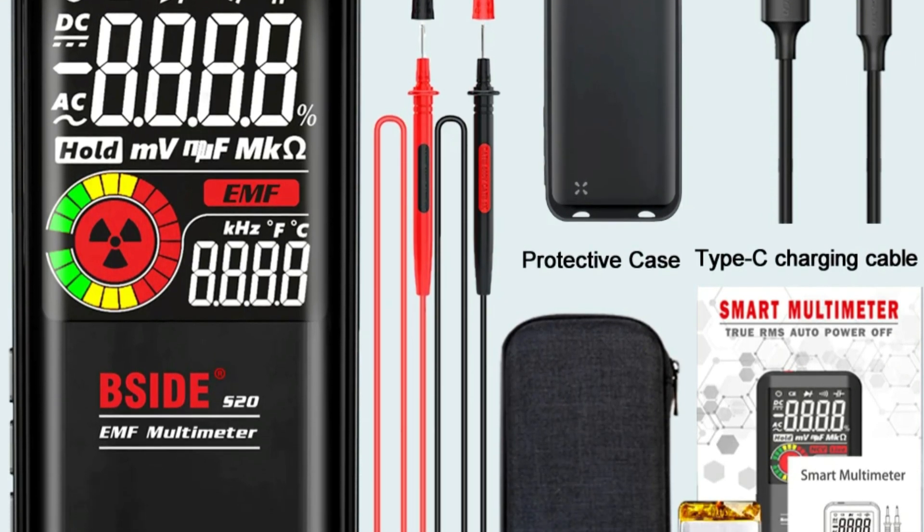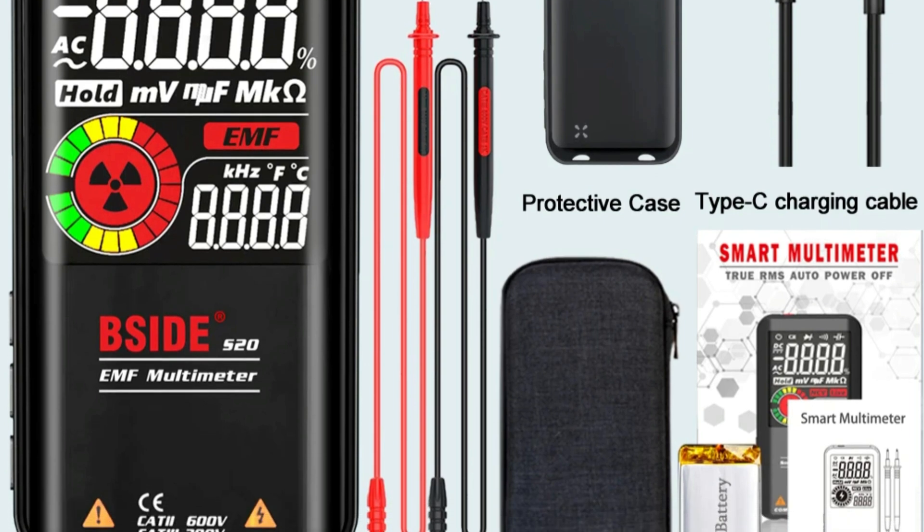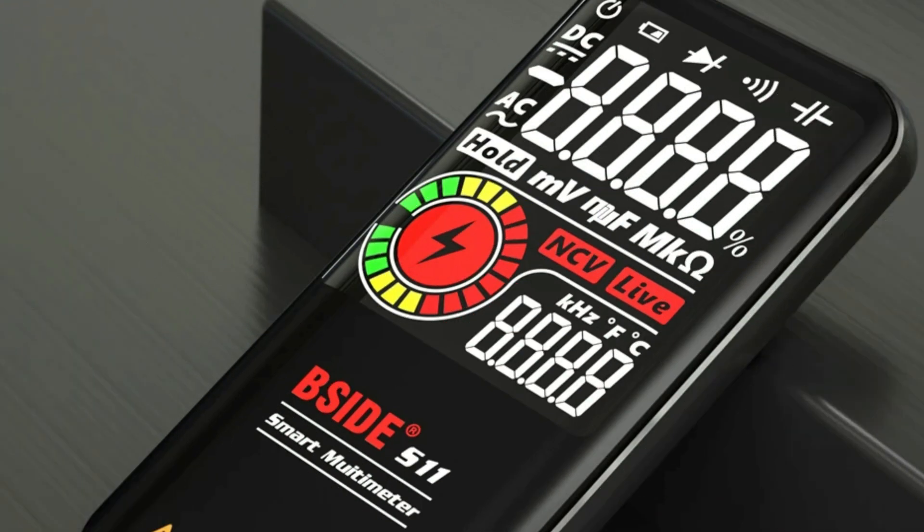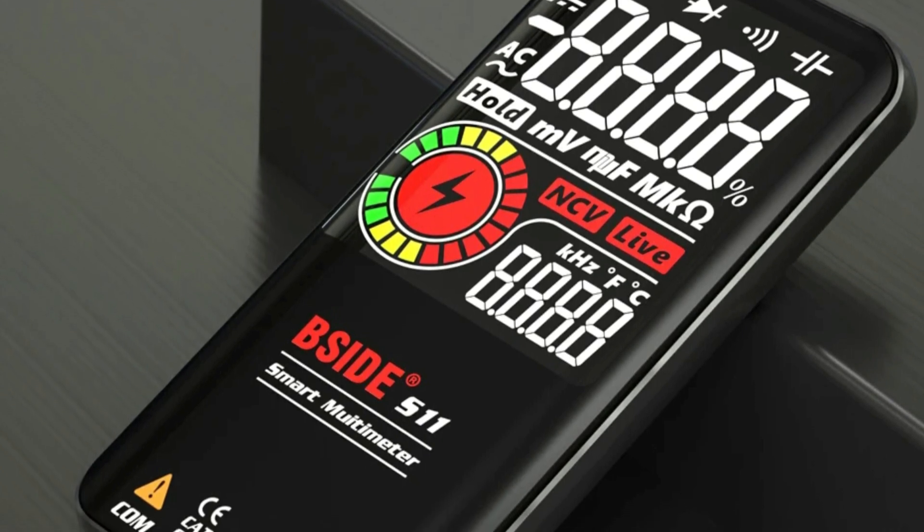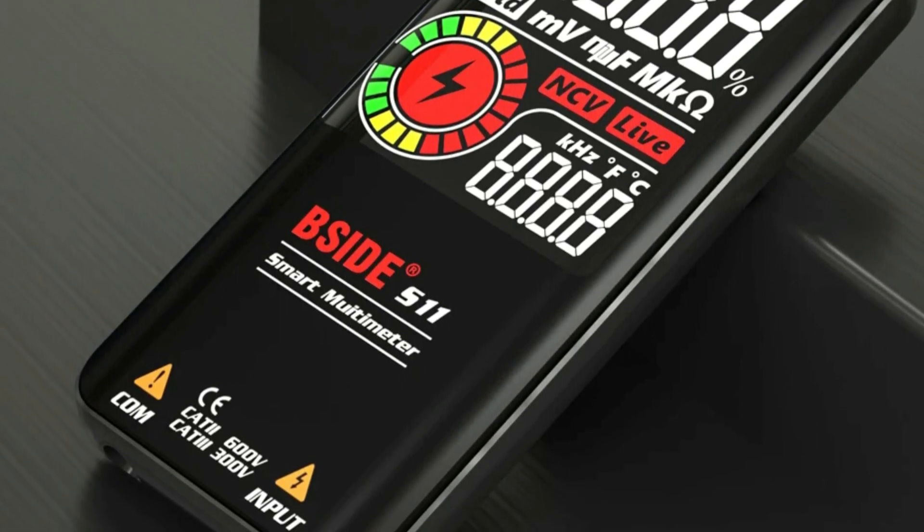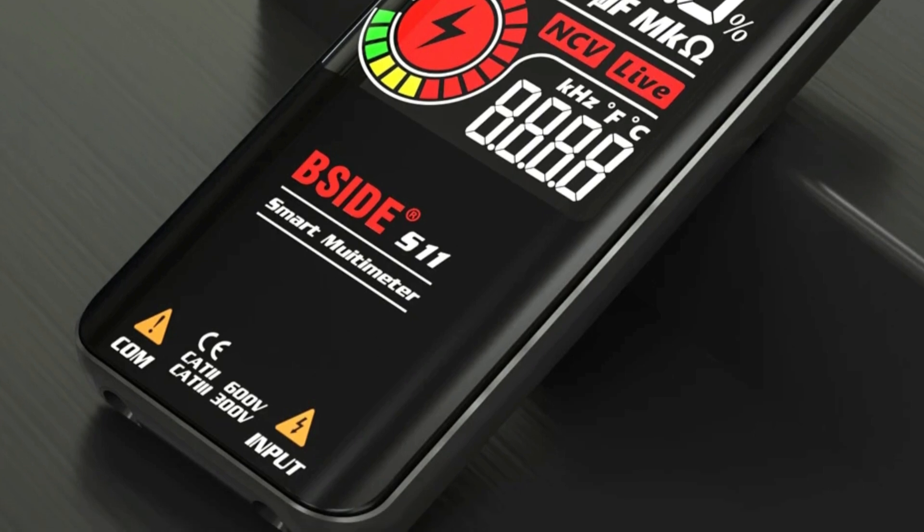The compact and lightweight S20 weighs only 110g, making it ideal for on-the-go jobs. It also features an automatic shutdown and low-voltage alert to conserve battery life. The S20 is designed for ease of use and reliability.